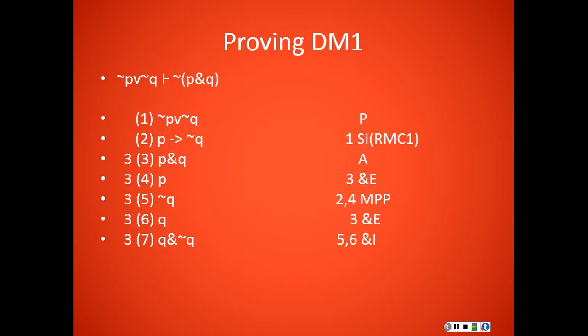So now that I have my contradiction, I can go ahead and discharge the assumption that I made for reductio on line 3 via conditional proof applied to lines 3 and 7. And now via reductio ad absurdum, I get not P and Q, which is exactly what I was attempting to prove.